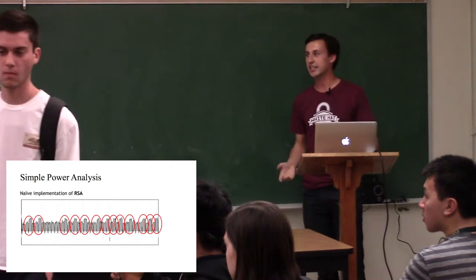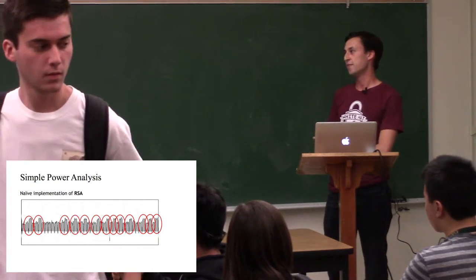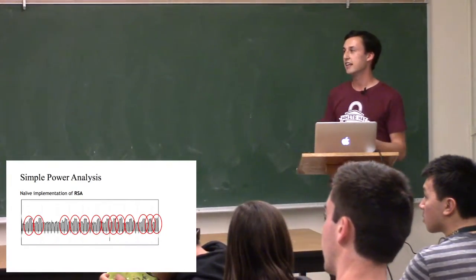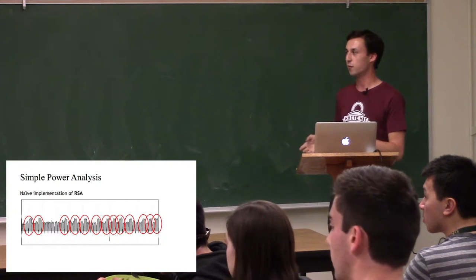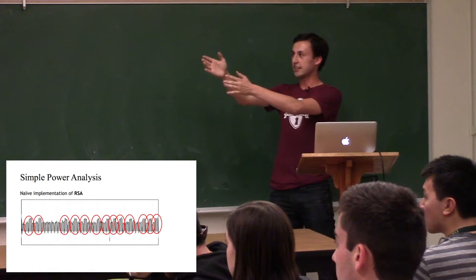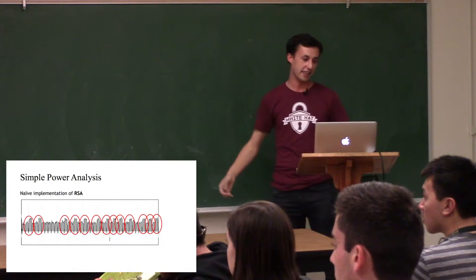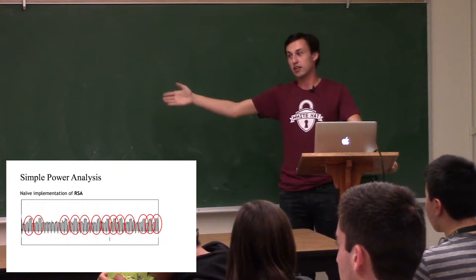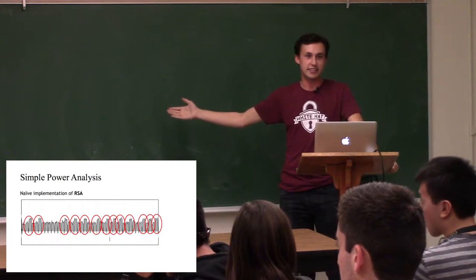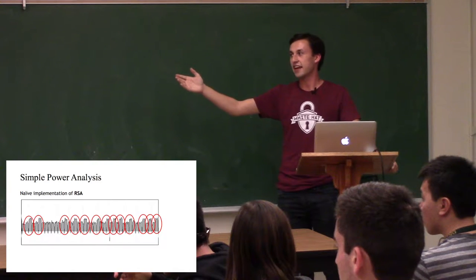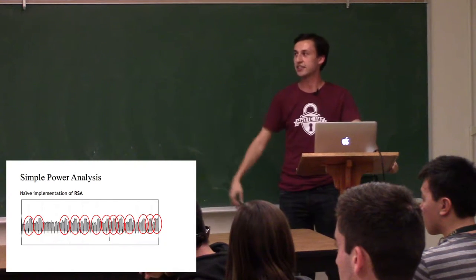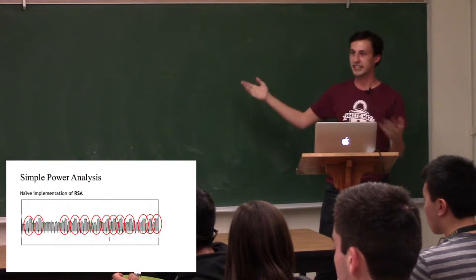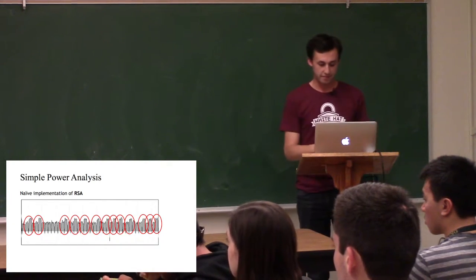What you might notice as you stare at this trace more is there are certain cases where there's a certain pattern in this algorithm or in this trace. And if Eve's particularly clever about how she interprets these peaks, she can say, oh, well, what if the shorter peak is a square operation and the taller peak is a multiply operation? And because Eve knows how RSA works, she can say, well, maybe a square is correlated with a zero in the secret key and a square multiply is correlated with one. And if Eve then takes this trace, assigns bits to each of the bits of the trace and then uses those bits as the secret key, Eve can decrypt the message.